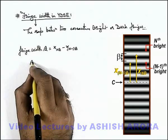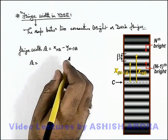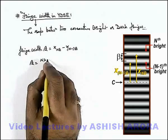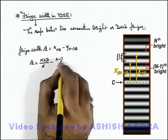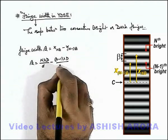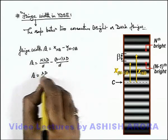Here in this situation if we substitute the values of x_nb and x_(n-1)b which we have studied in the previous section, this will be nλD/d minus (n-1)λD/d. So we are getting the fringe width is equal to λD/d.